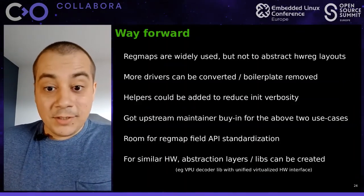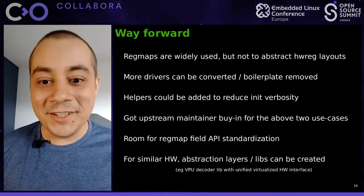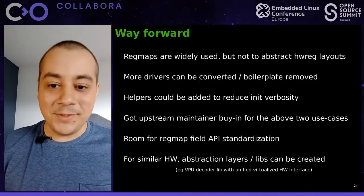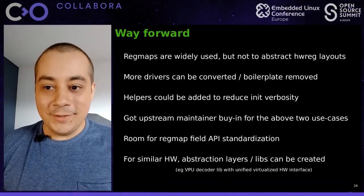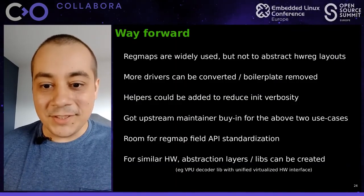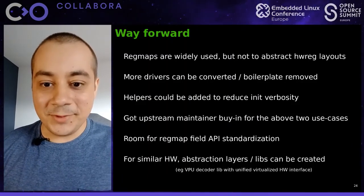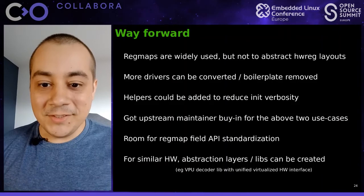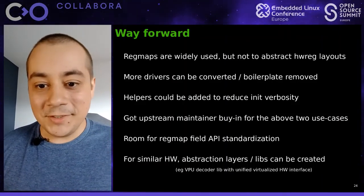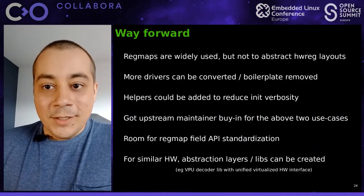Maybe in the future — and this is just an idea, not a proposal for hardware abstraction layers in the kernel — we could have some standardized regmap field APIs for various types of hardware like video decoders, which all basically have a lot of common logic and common registers. They all have to set things like the bit depth of the bitstream — whether it's 8-bit or 10-bit — and you could have a unified API to do that via the regmap field API.